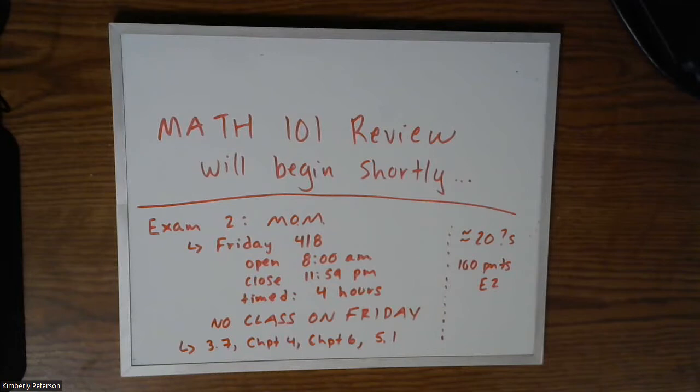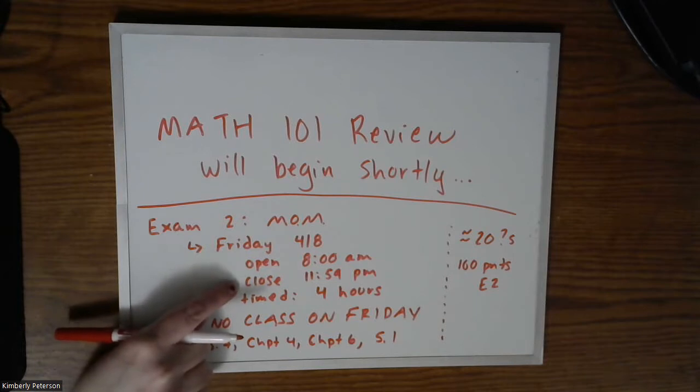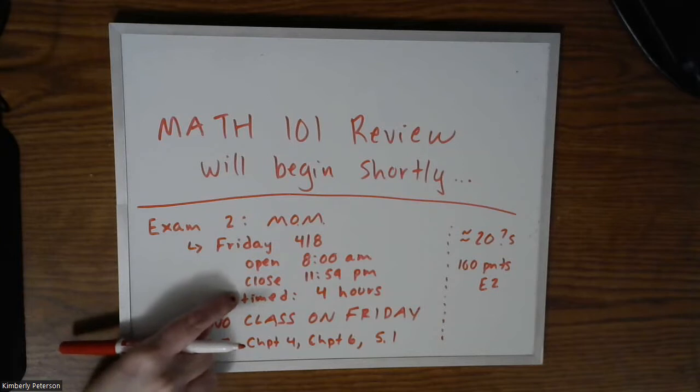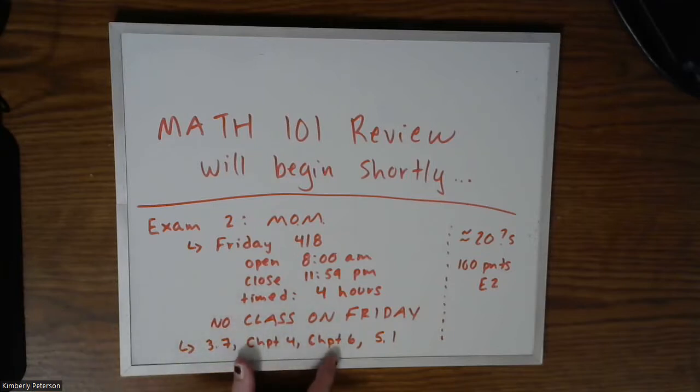So on Friday, you will go into your MyOpenMath, you will open it up anytime between 8 and midnight. You will take the exam within the four hours that are allotted. You will not need to show up to Zoom, you can just use the Zoom time to work on the exam. And cover this material with approximately 20 questions worth 100 points. So are there any questions with the logistics of how I will conduct the exam? Okay, yeah, it'll be very similar to how you dealt with exam one.